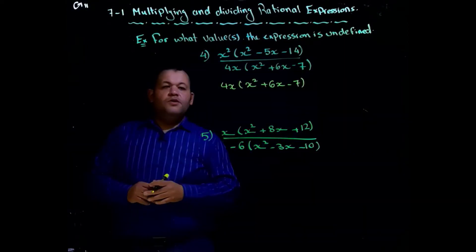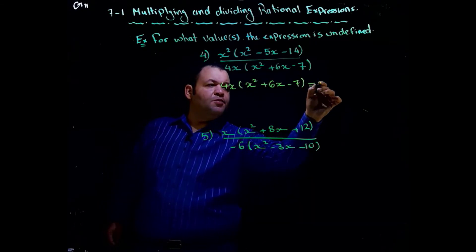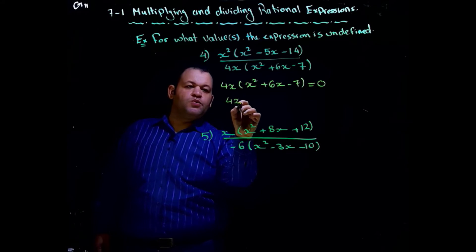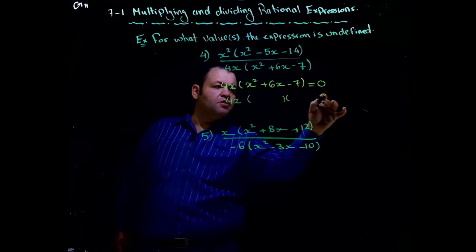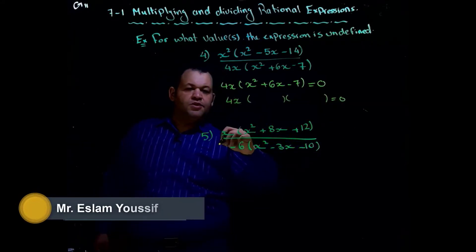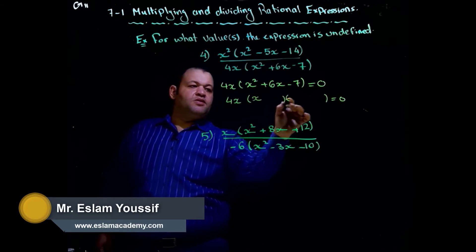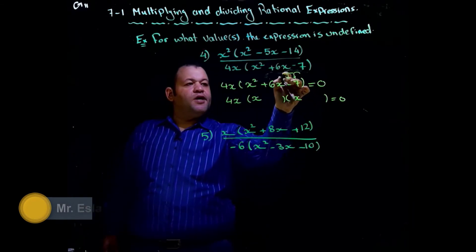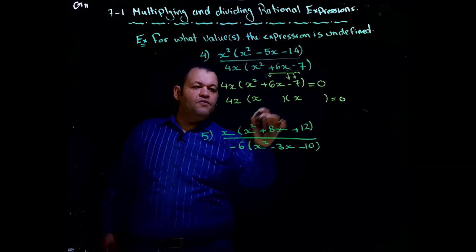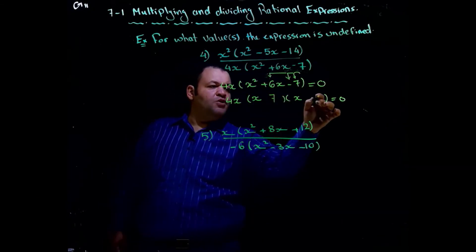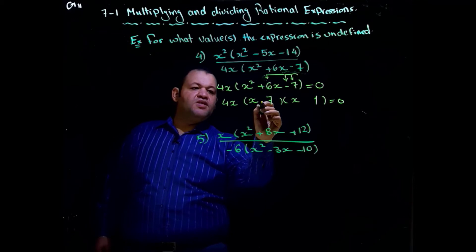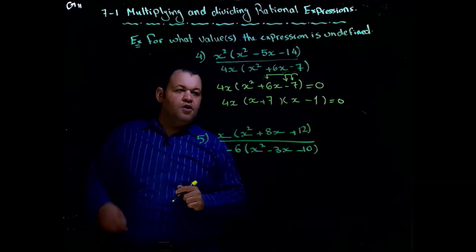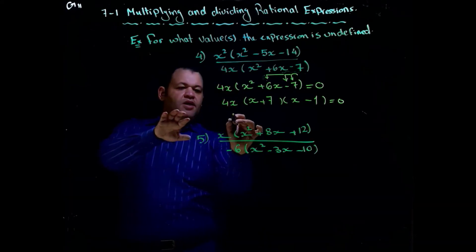This expression is undefined if the denominator is equal to zero. We factorize: 4x stays without change, then we open two brackets for the trinomial. We need two numbers that multiply to 7 and subtract to 6 — those are 7 and 1. The sign of the middle term follows the sign of the greatest number, so positive times negative equals negative.